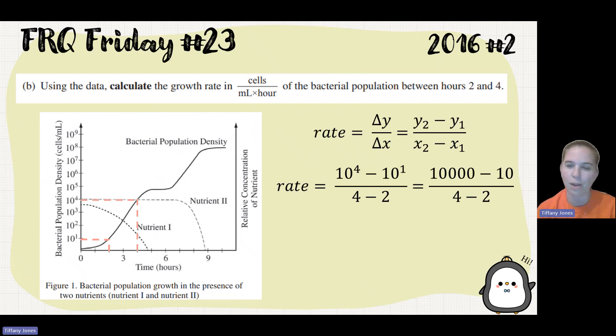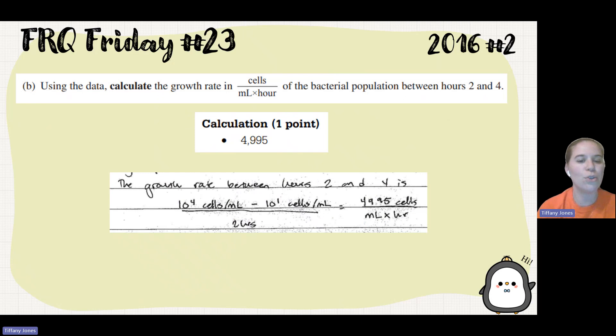So 10 to the 4th minus 10 to the 1st divided by 4 minus 2. That's just 10,000 minus 10 divided by 4 minus 2. Don't fall into the trap my students did and think 10 to the 4th minus 10 to the 1st is 10 to the 3rd, because that's not right. That gives us 9,990 divided by 2, giving us 4,995, which is our answer. The growth rate between hours two and four is 4,995 cells per milliliter hour.